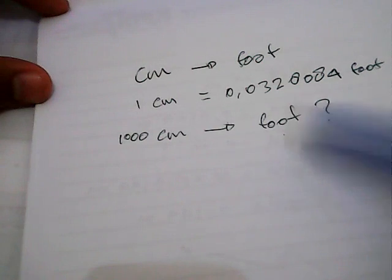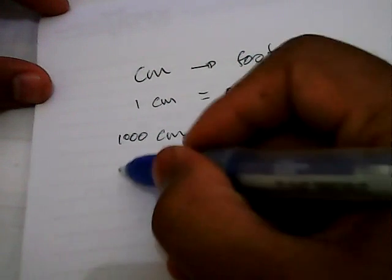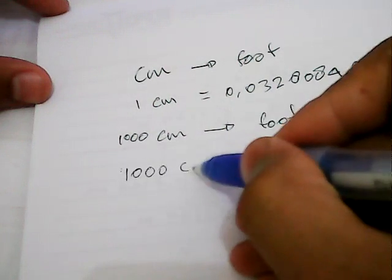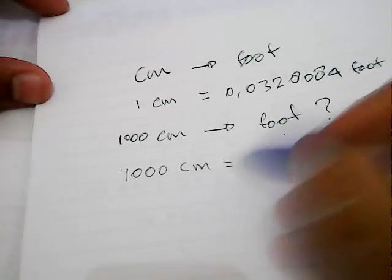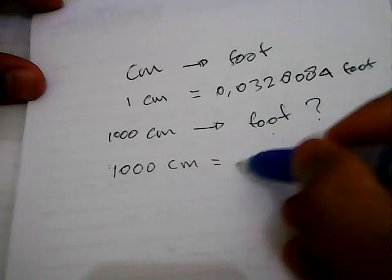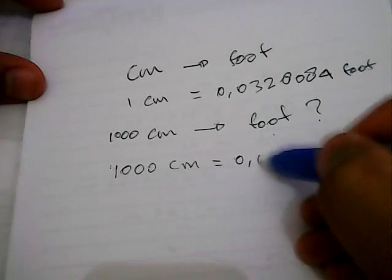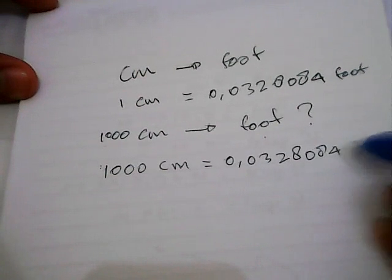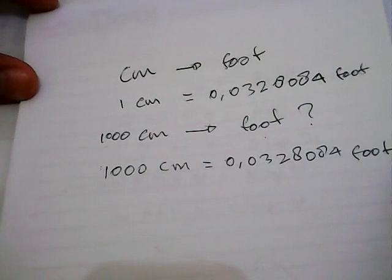The first thing you need to do is write down this number again. So, I write this number: 1,000 centimeter equal to 0.0328084 foot. Right?